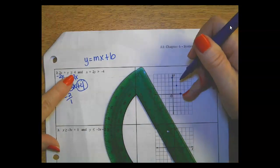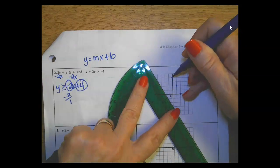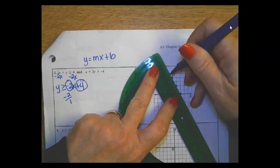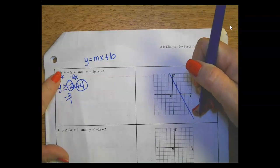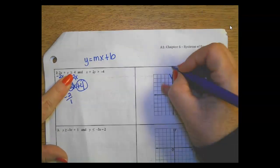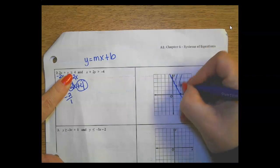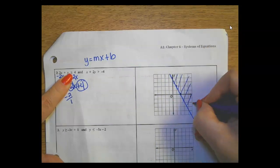Get that straight edge. It's a solid line because of the greater than or equal to. And it says greater than, so where's my sunshine? Up. Which side is up? It's this side.